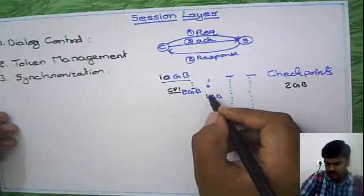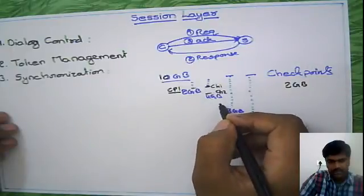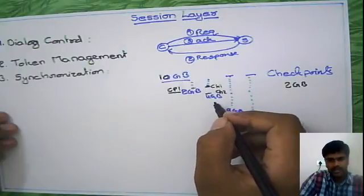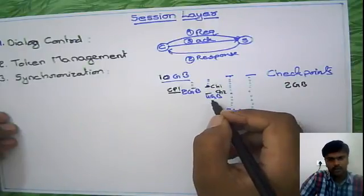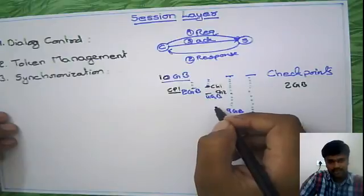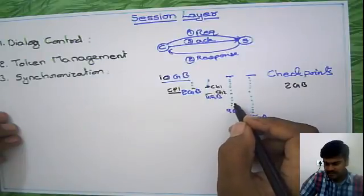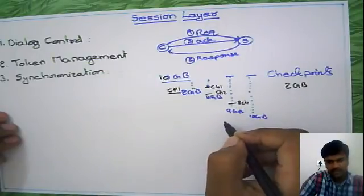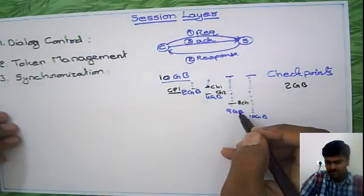In the second case, after downloading 2 GB — Checkpoint 1 — and at 4 GB — Checkpoint 2 — it continues. Assume that after 4.5 GB the connection is lost. In this situation it will resume downloading from Checkpoint 2. Even if you come to the case where 8 or 9 GB is downloaded and you lose the connection, at 8 GB you have a checkpoint — at 2 GB, 4 GB, 6 GB, 8 GB — so it takes the last checkpoint.